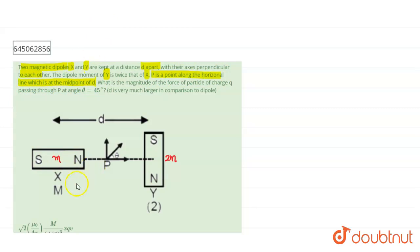So the distance of P from the first dipole is given by, this distance is given by D by 2 and this distance is given by D by 2.